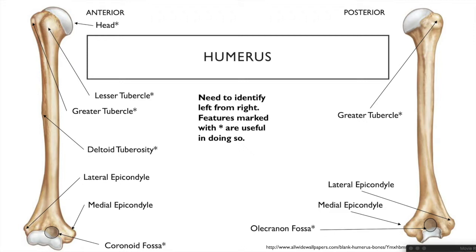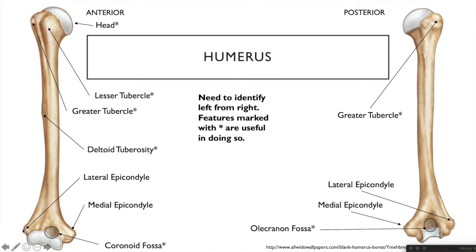At the inferior region of the humerus we encounter epicondyles — structures above the condyles. The medial epicondyle is significantly larger and can be felt by extending your arm with the palm forward and rubbing the inside of the elbow. The lateral epicondyle is smaller and on the lateral side. Both epicondyles allow muscles to attach.